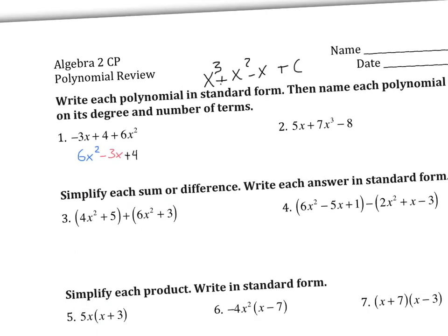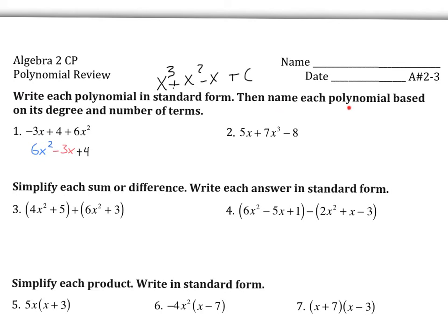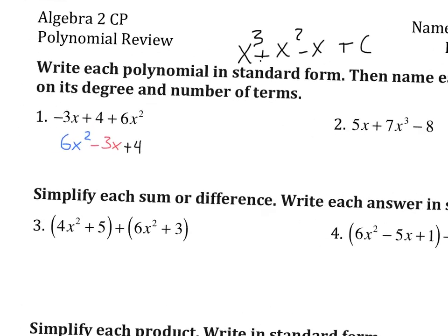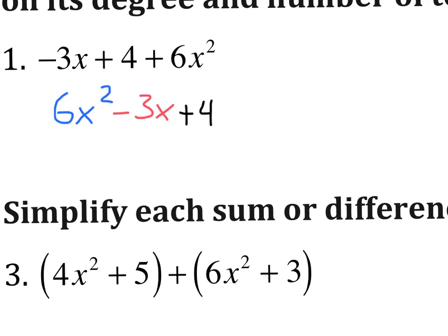Now it also asks us to name each polynomial based on its degree and the number of terms. So the highest degree here is a 2. So we call that a quadratic. And there are three terms, 1, 2, 3. So we call that a trinomial. So standard form, 6x squared minus 3x plus 4. And this is a quadratic trinomial.